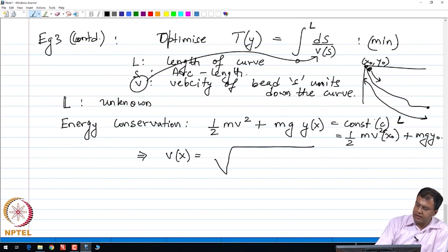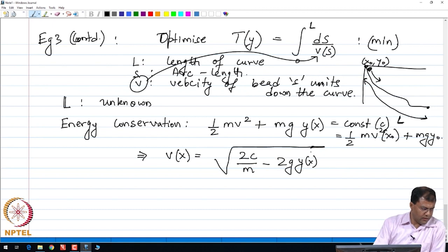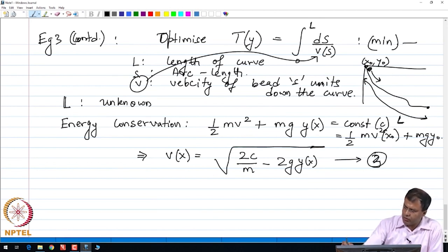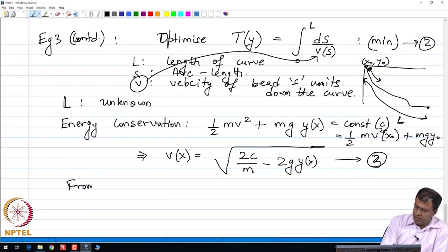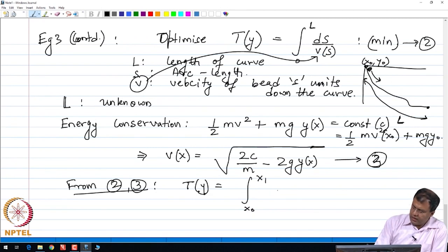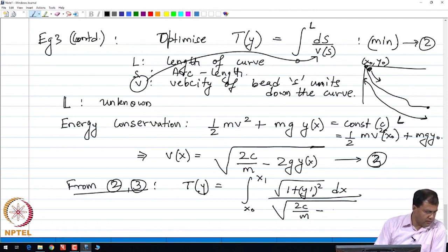From this statement, I can directly find what is the value of this velocity V of X. This is equal to, taking the right hand side equal to C, you see that this particular expression comes out to be square root of 2C by M minus 2G Y of X. Let me denote this by 2 and this particular expression by 3. From 2 and 3, we see that my time functional is as follows. My T of Y is integral from X0 to X1 times the integrand, which is the arc length 1 plus Y prime square dX divided by square root 2C by M minus 2G Y of X.